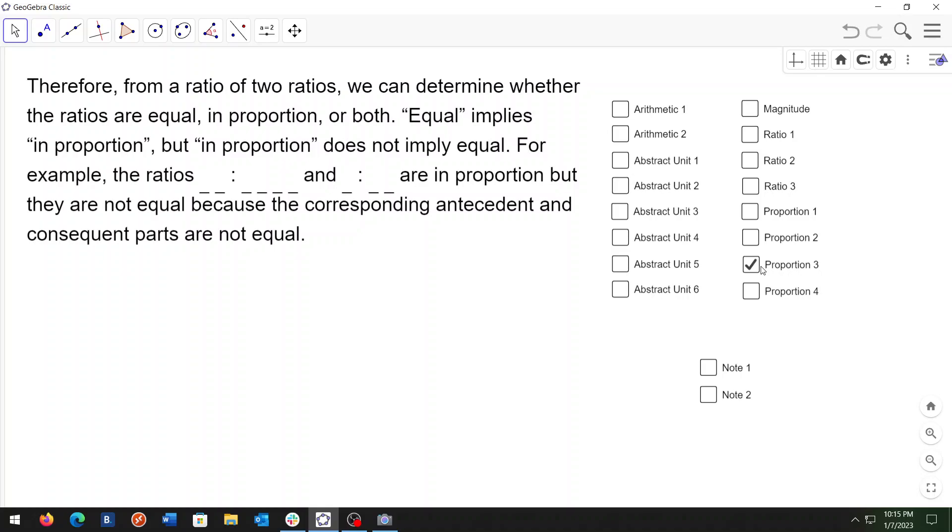Therefore, from a ratio of two ratios, we can determine whether the ratios are equal, in proportion, or both. Equal implies in proportion, but in proportion does not imply equal. For example, if you compare these two ratios here, they are in proportion but they are not equal because the corresponding antecedent and consequent parts are not equal.